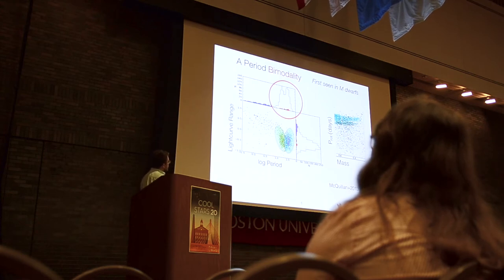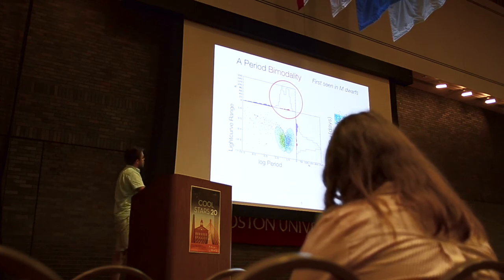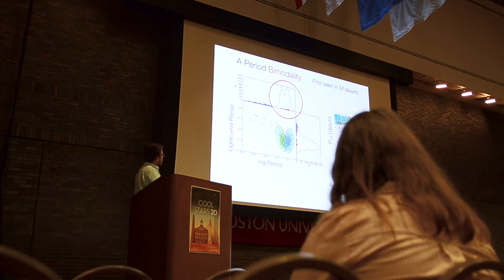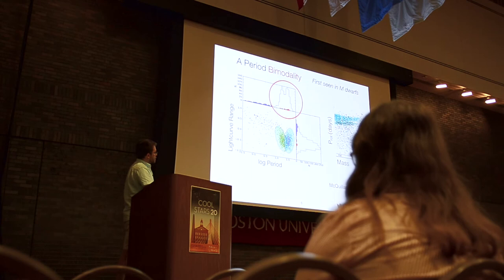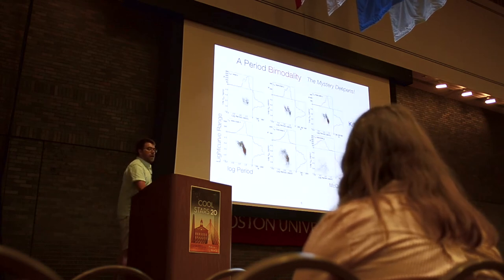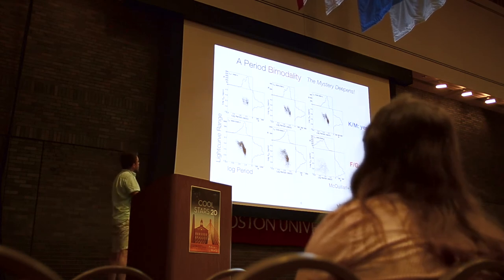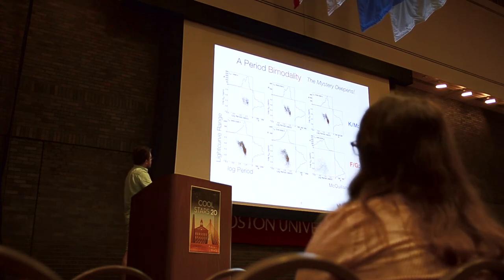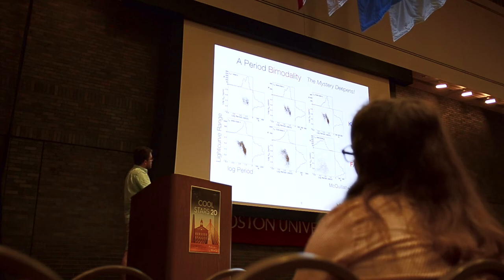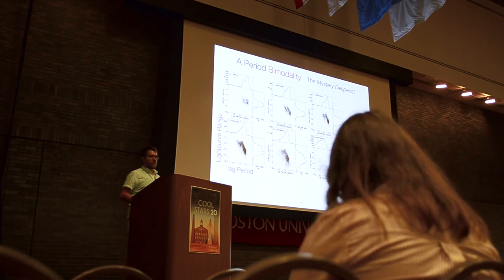Indeed the period distribution was bimodal — there was a slower and more rapidly rotating chunk, about evenly split. There are also very rapid rotators in the hours-to-a-day period range. So there's a bimodality somewhere around 10 to 20 days. The mystery deepened when they extended the sample to all Kepler sources. This bimodality you can see in clumps of light curve range versus period. You can see it for the M-dwarfs and sort of for the K-dwarfs, but by the time you get to G-dwarfs and F stars, there's no evidence of bimodality. This is an interesting mystery.